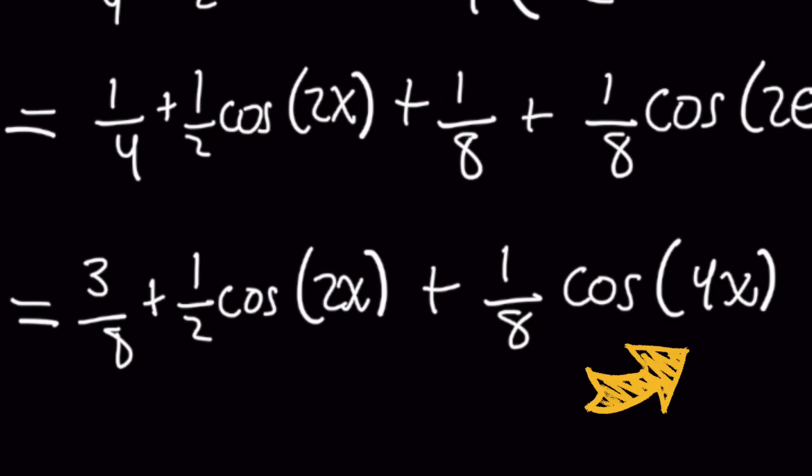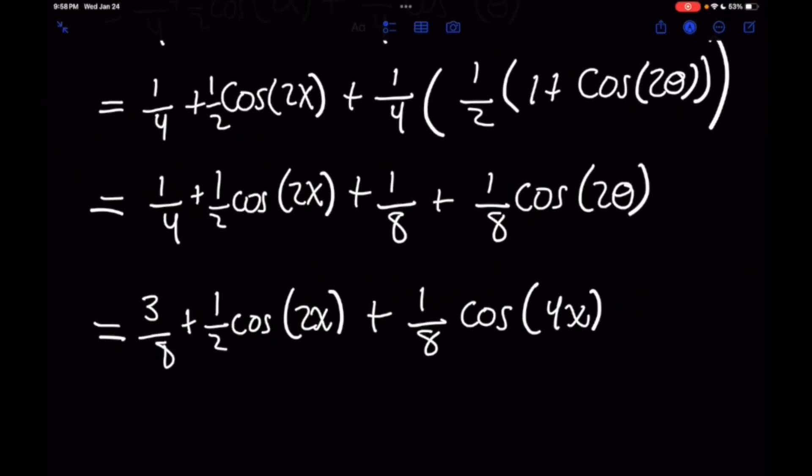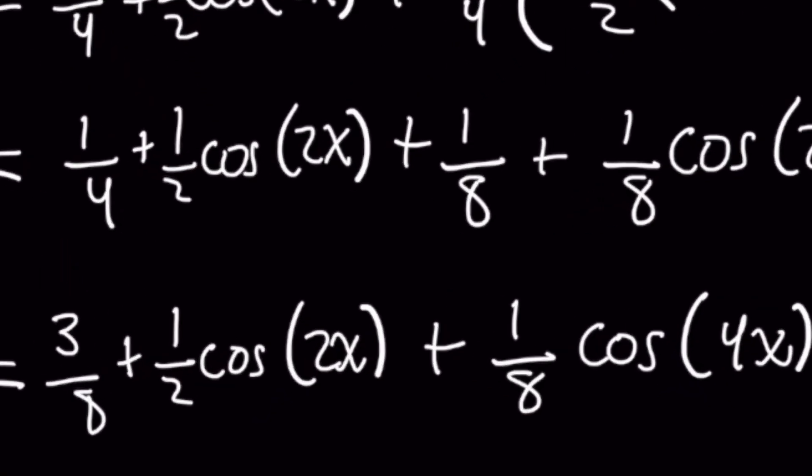And so the original problem that was the integral of cosine to the fourth can now be rewritten as a sum of these terms, each one being integrated. Three-eighths is easy to integrate. Now for the one-half and one-eighth terms, you have cosine of 2x and cosine of 4x, and for those they're simple too with a simple u-substitution method.